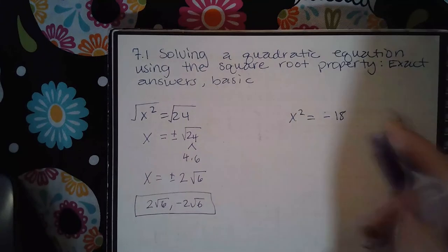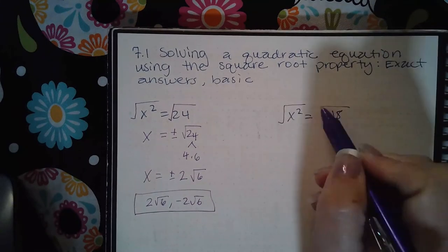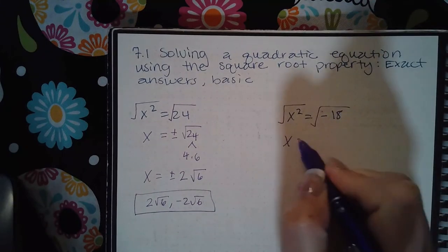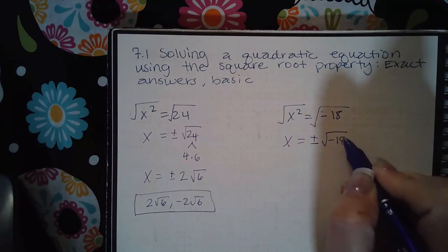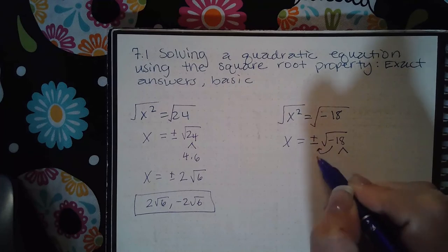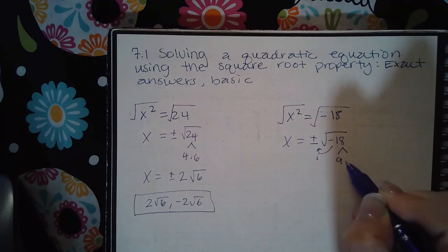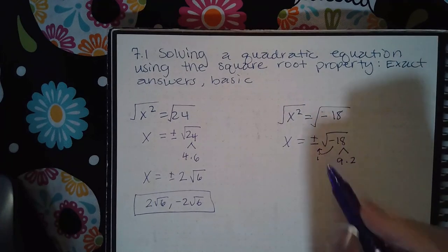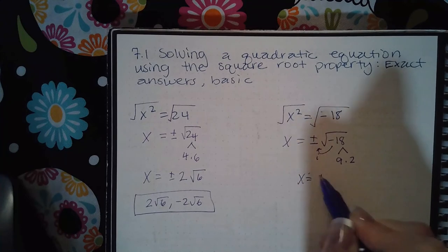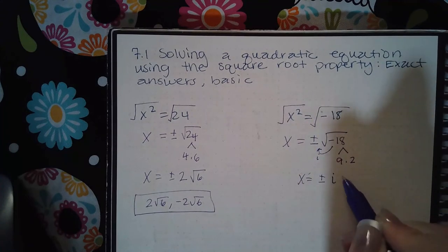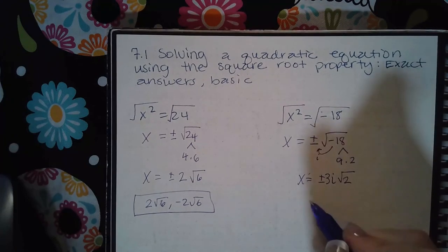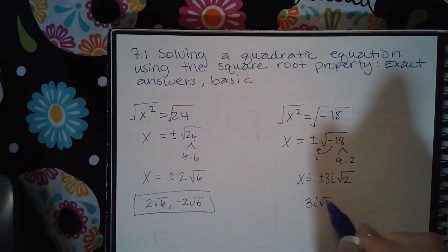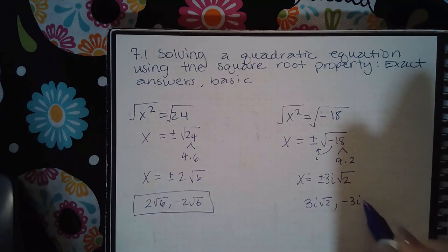In the second example, if we take the square root on both sides, we get x equals plus or minus the square root of negative 18. The negative will come out as an i. 18 is 9 times 2, which means you'll get x equals plus or minus i times the square root of 9 times the square root of 2. The square root of 9 is 3, and the square root of 2 cannot be simplified, so you get 3i square root of 2 and negative 3i square root of 2.